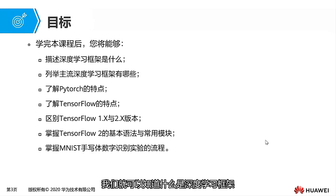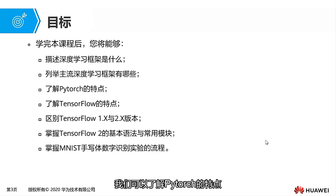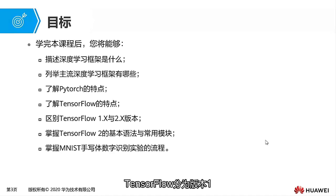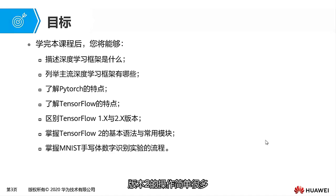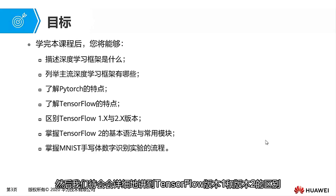After completing this chapter, we'll understand what a deep learning framework is and be able to list the current mainstream deep learning frameworks. We'll know the characteristics of PyTorch and the characteristics of TensorFlow. TensorFlow is divided into version 1 and version 2. Compared to version 1, version 2 is much simpler to use. It has built-in mechanisms like eager execution.